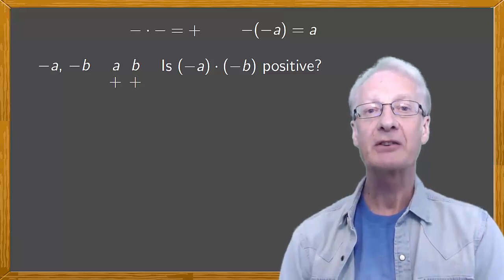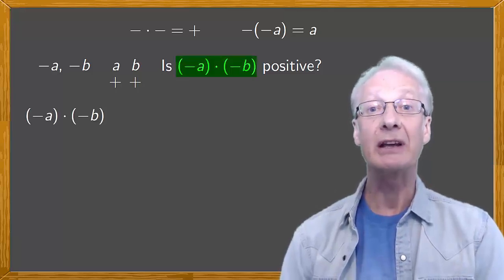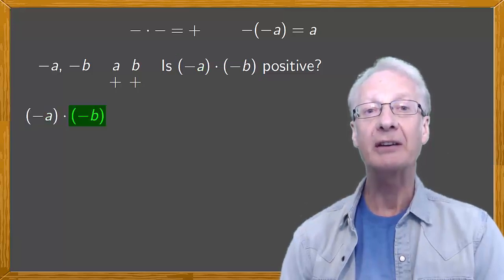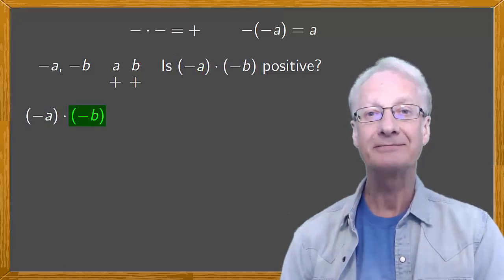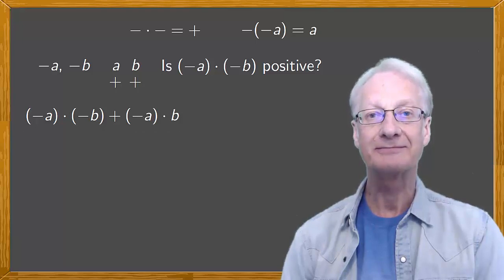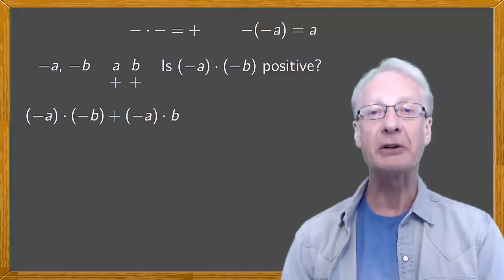First, starting from negative a times negative b, change the sign of the second factor to give negative a times b. Next, add these two expressions. Now apply the distributive property.